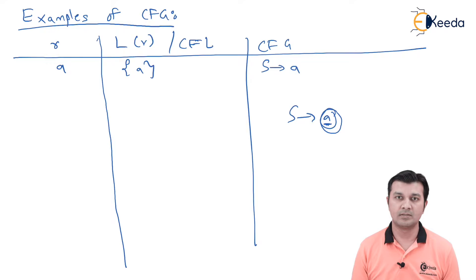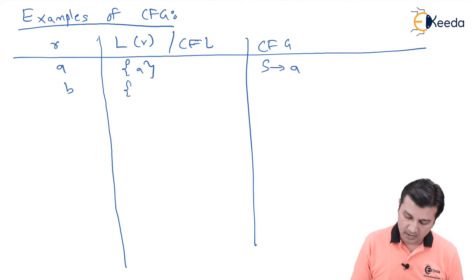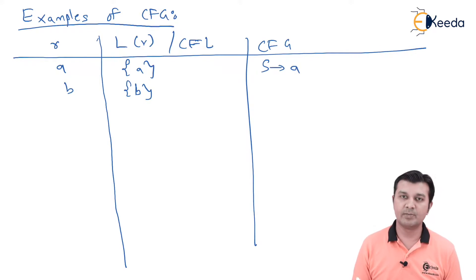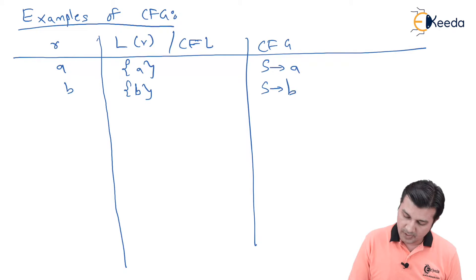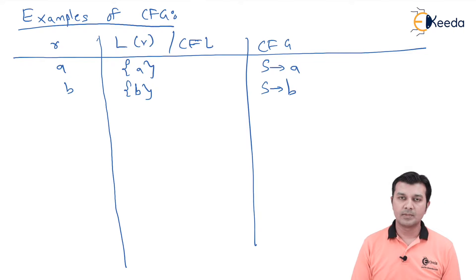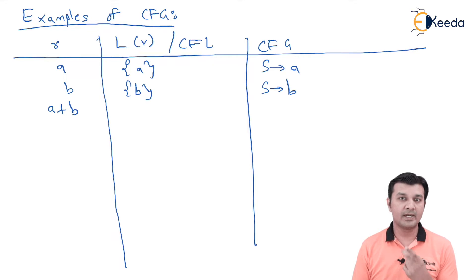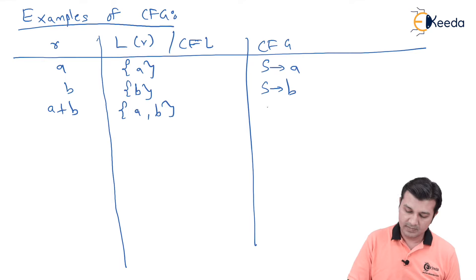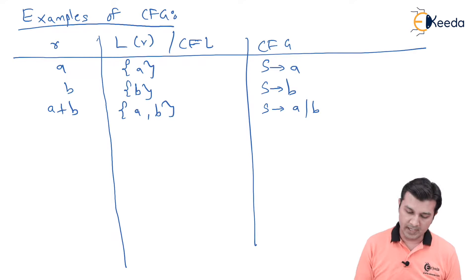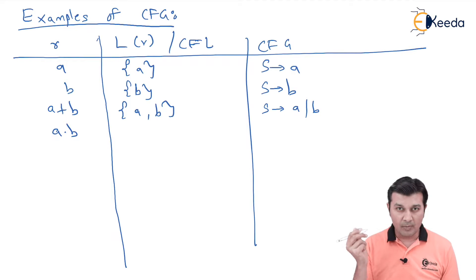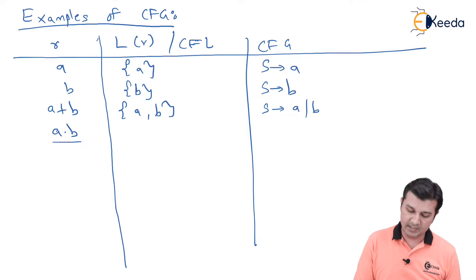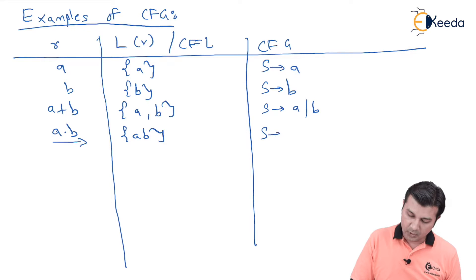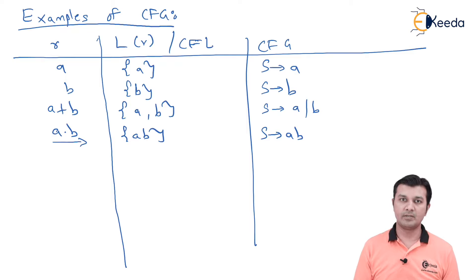For the regular expression 'b', the context-free language is simply {b} and the CFG is S → b. For 'a + b' (union), either 'a' or 'b' is selected, so the CFL is {a, b} and the CFG is S → a | b. For 'a · b' (concatenation), the language is {ab} and the CFG is S → ab.